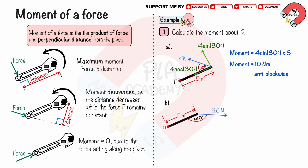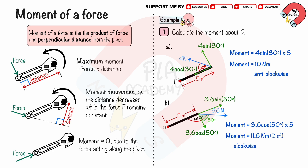Part B: A 3.6 N force acts on the rod at a 140-degree angle, creating a moment about point P, which is 5 meters from the point of force application. We resolve the 3.6 N force into components. This angle is 140 − 90 = 50 degrees. The perpendicular component is 3.6 cos 50° and the parallel component is 3.6 sin 50°. The moment of the 3.6 N force about P is 3.6 cos 50° multiplied by 5. We get the moment equals 11.6 N·m (three significant figures) in the clockwise direction.